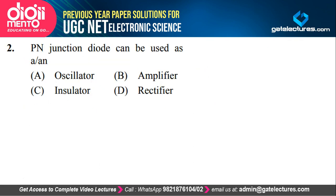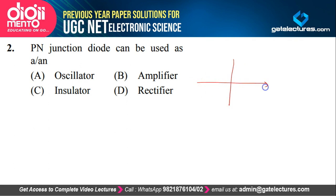Now look at the next question. They are asking: a P-N junction diode can be used as an oscillator, amplifier, insulator, or rectifier. You know the characteristics of a P-N junction diode. What happens is, a P-N junction diode allows current only in a single direction. These are the approximate characteristics of a P-N junction diode.